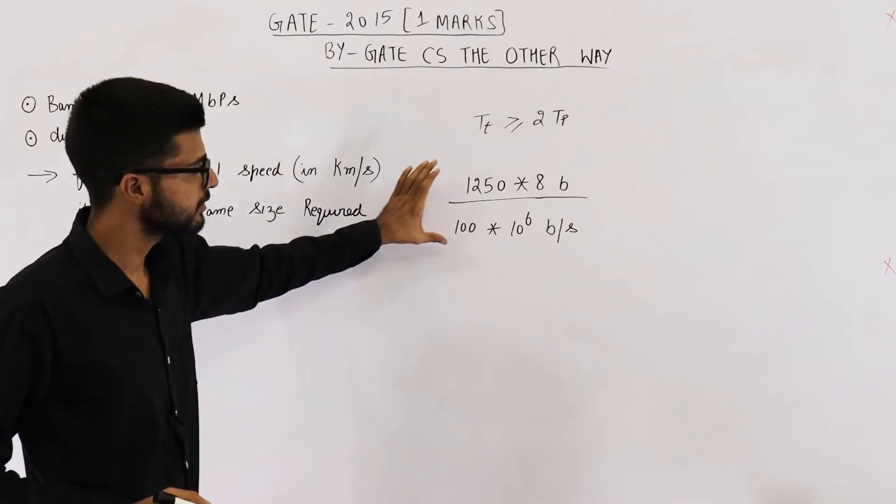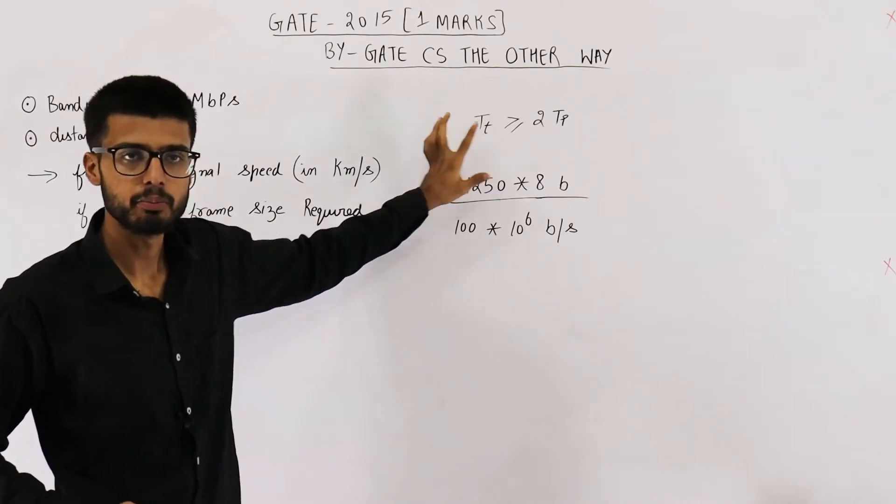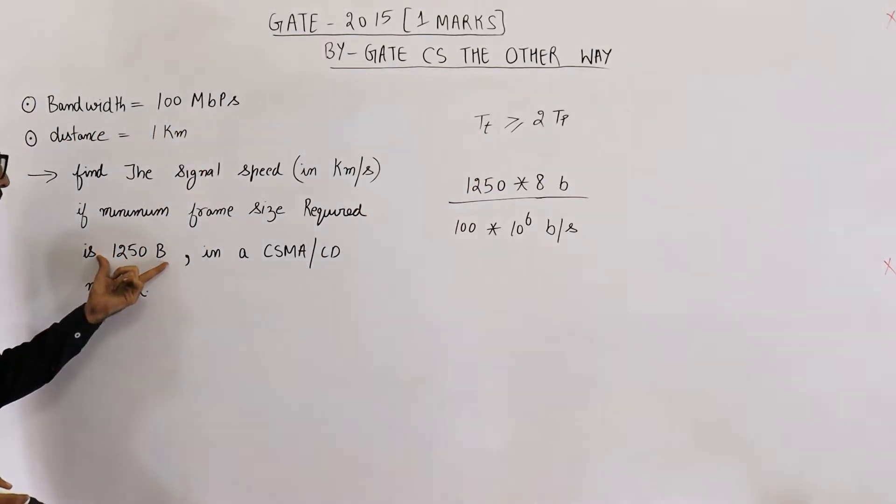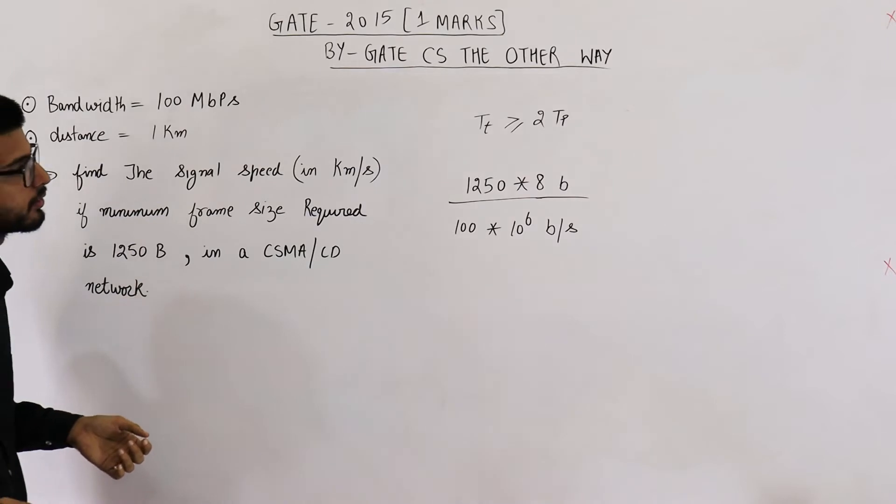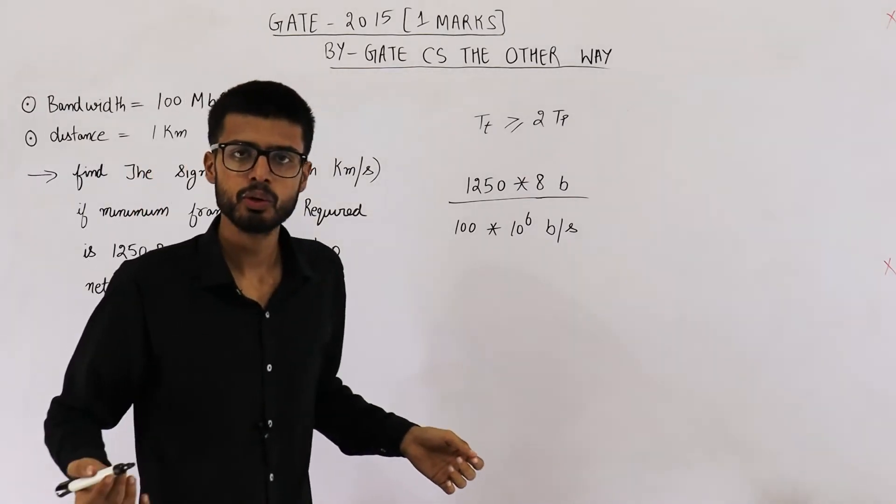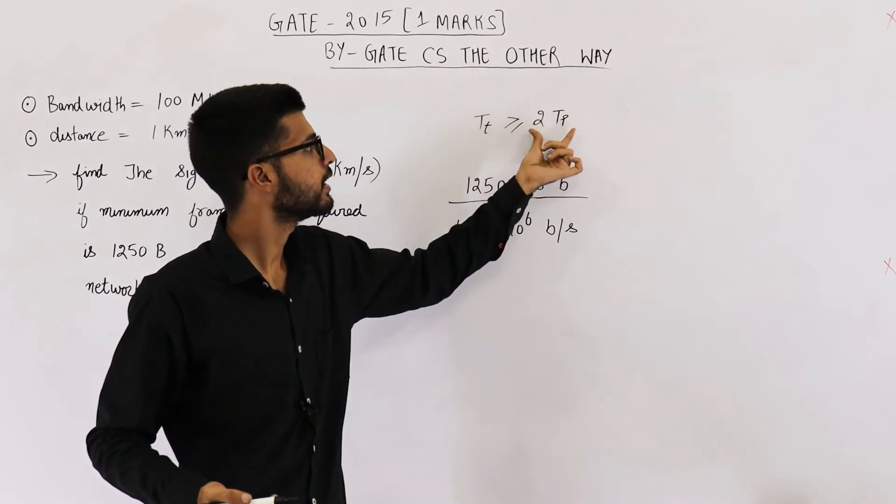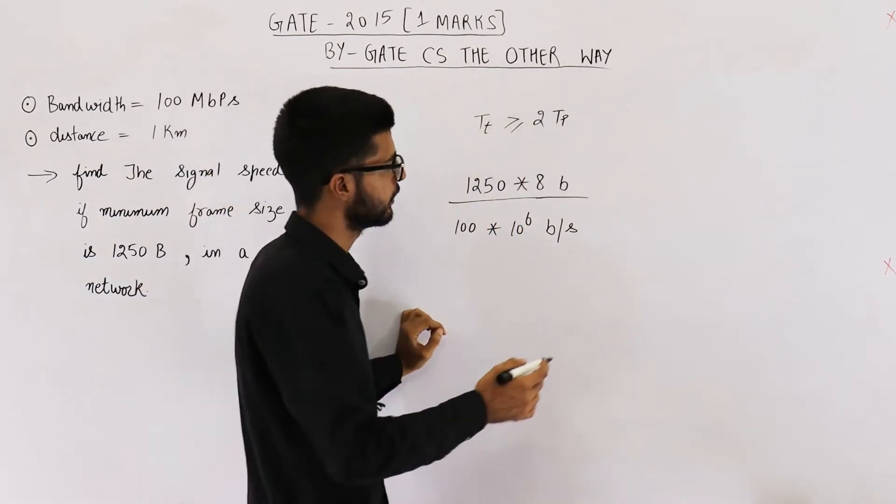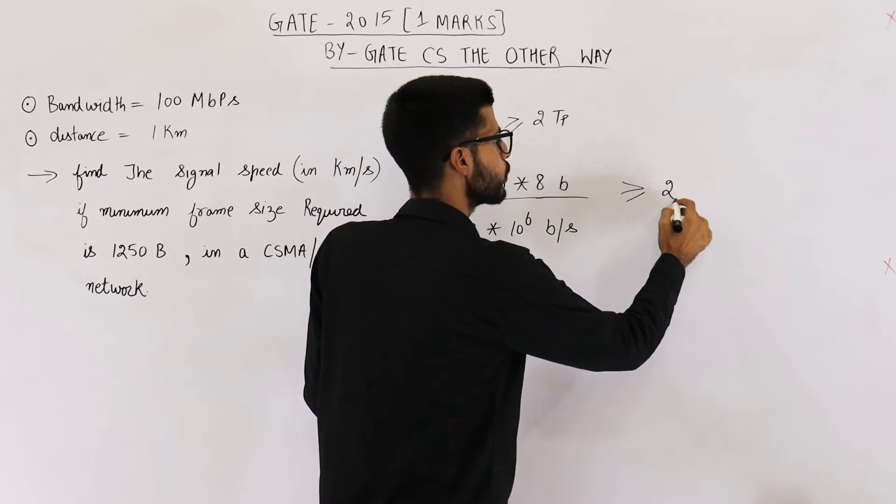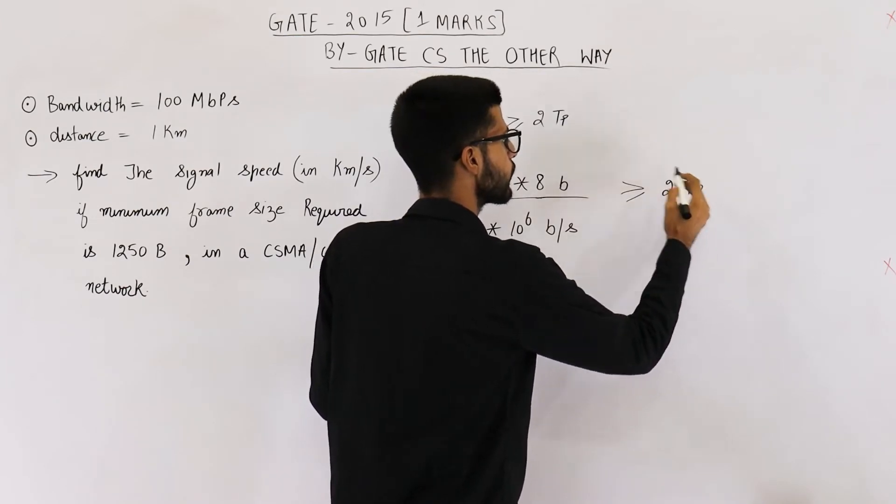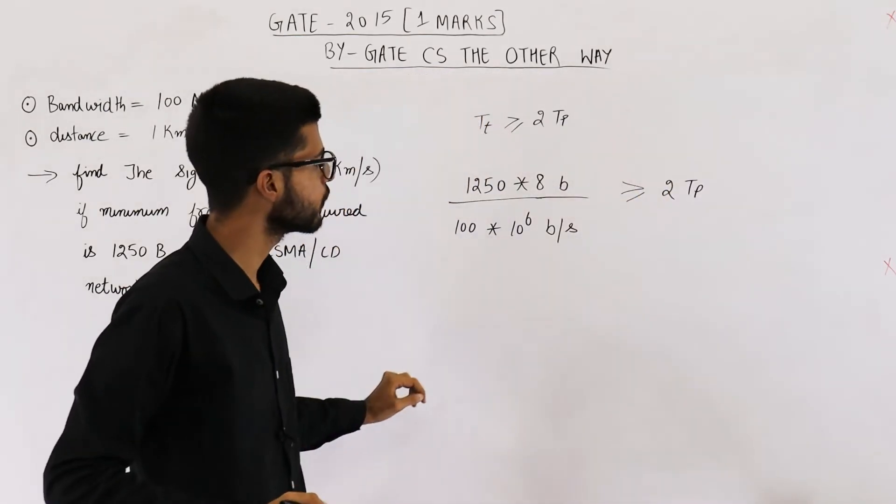Now, this is the minimum value of TT because we have substituted minimum value of frame size. Also, in CSMA/CD, minimum value of TT is 2 into TP. That means this will be greater than or equal to 2 into TP. Now, have a look.